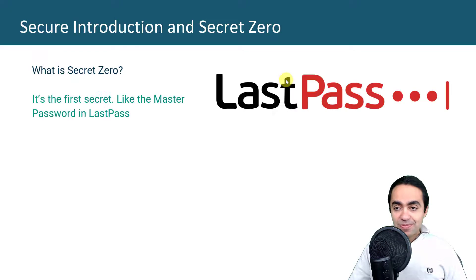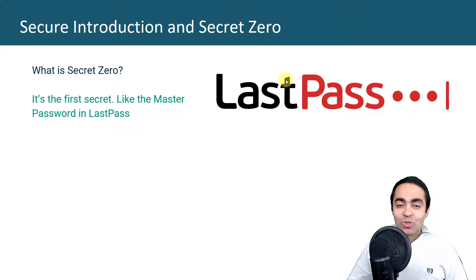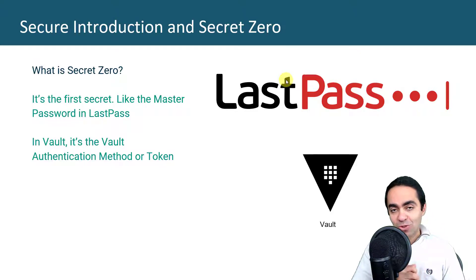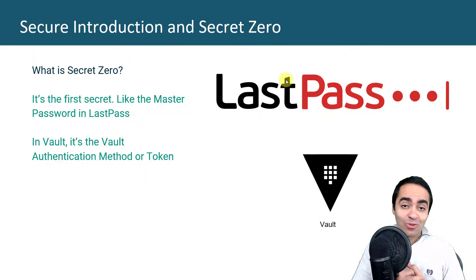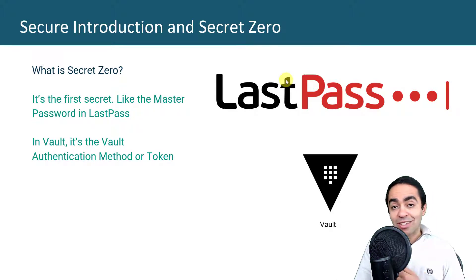So what is secret zero? If you're familiar with a password manager such as LastPass or 1Password, you know there's a master password that you need to unlock the vault where you're storing all your actual secrets. In the same way, with HashiCorp Vault — where we want to centralize all our secrets — the question is: where do you store the Vault token to be able to access all those secrets? That is secret zero: how do you get that initial Vault token to access the secrets stored inside Vault? It's really the Vault authentication method or token that we need to get into Vault.